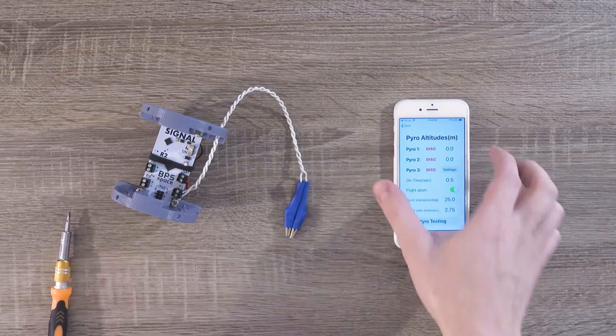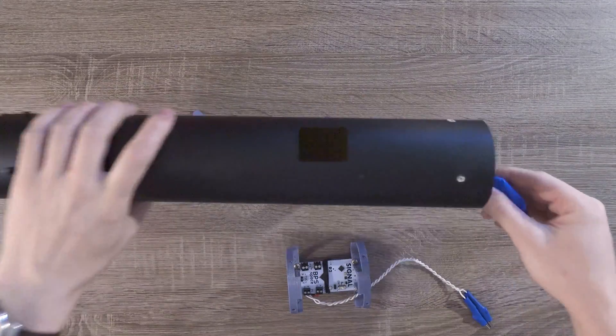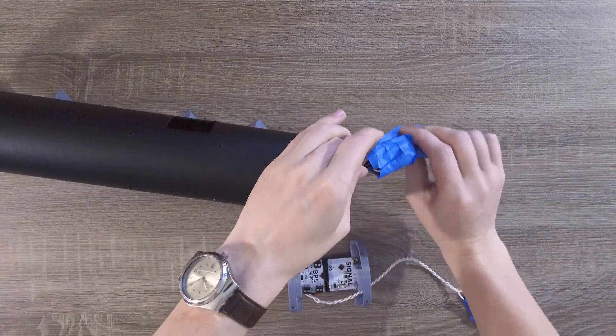That looks good to me, so I'll turn the computer off, and it's time to mount it in the rocket. First up, we need to remove that tape that we put on those TVC extension cables from earlier.